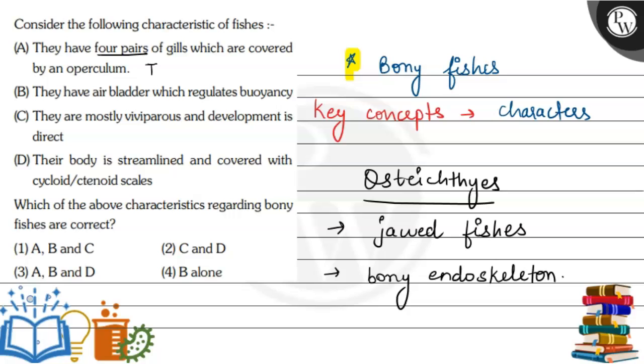Third statement: they are mostly viviparous. But here's a twist because bony fishes are actually oviparous. Mostly they are oviparous. So that's why this statement is wrong.